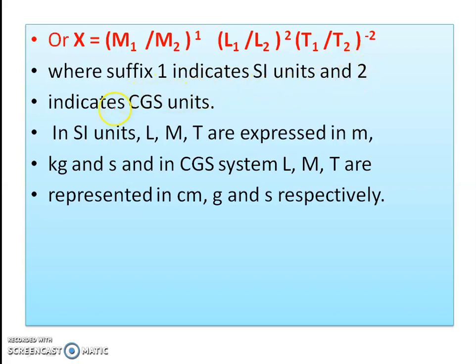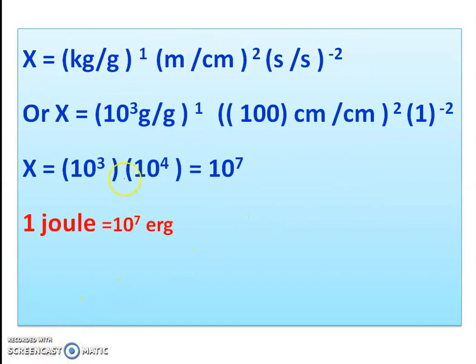In CGS unit, mass, length, and time are expressed in gram, centimeter, and second. In SI system, kilogram, meter, and second. X equals mass in SI system kilogram upon CGS system gram to the power 1, length SI system meter upon CGS system centimeter to the power 2, and time second upon second to the power minus 2.